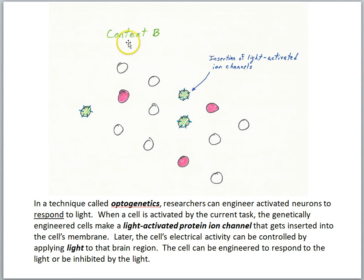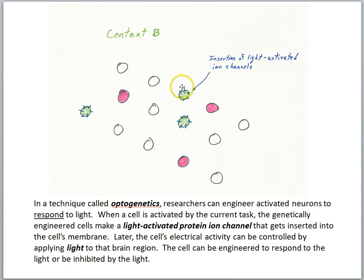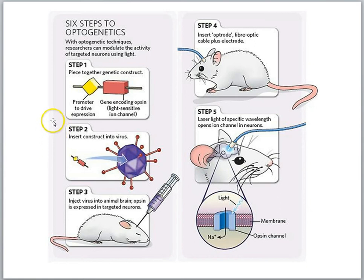If the animal is placed in context B, the green cells become active. If the animal has been prepared for optogenetics research, these activated cells will start to make a protein — an ion channel inserted into the membrane. These proteins respond to light, opening an ion channel so ions enter the cell. Depending on which protein is inserted, light can be used to activate or inhibit the cell.